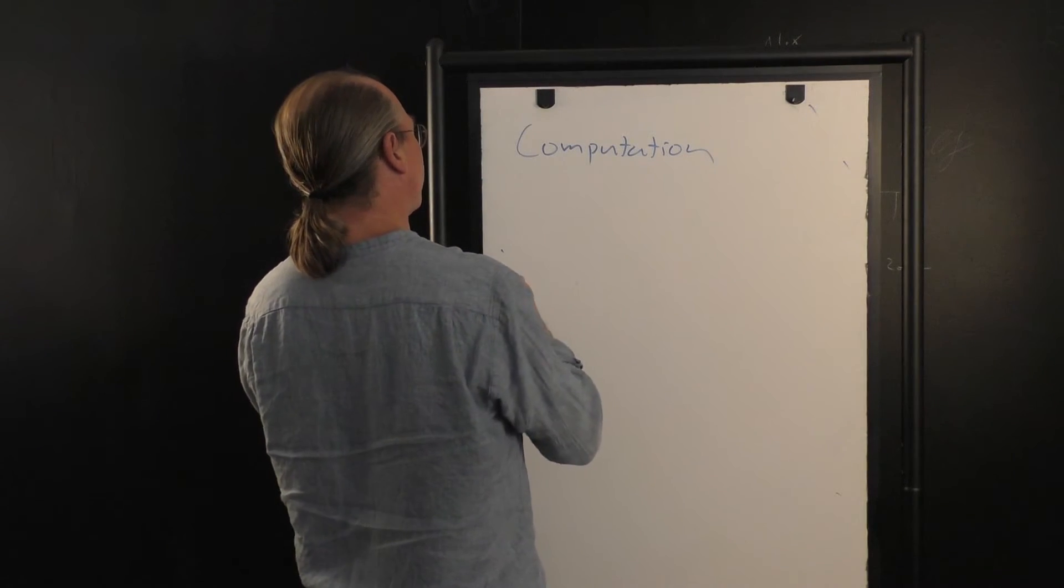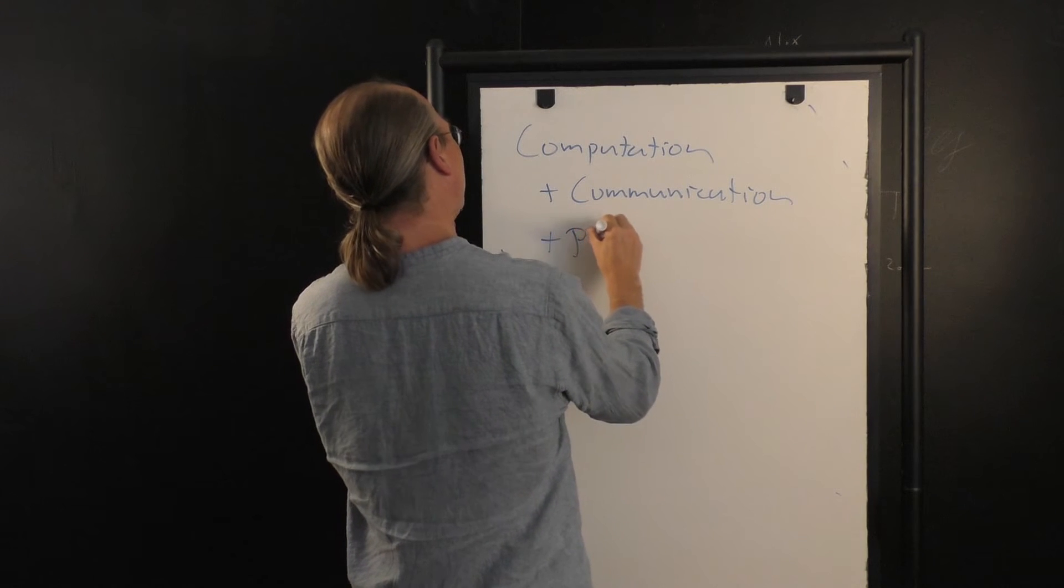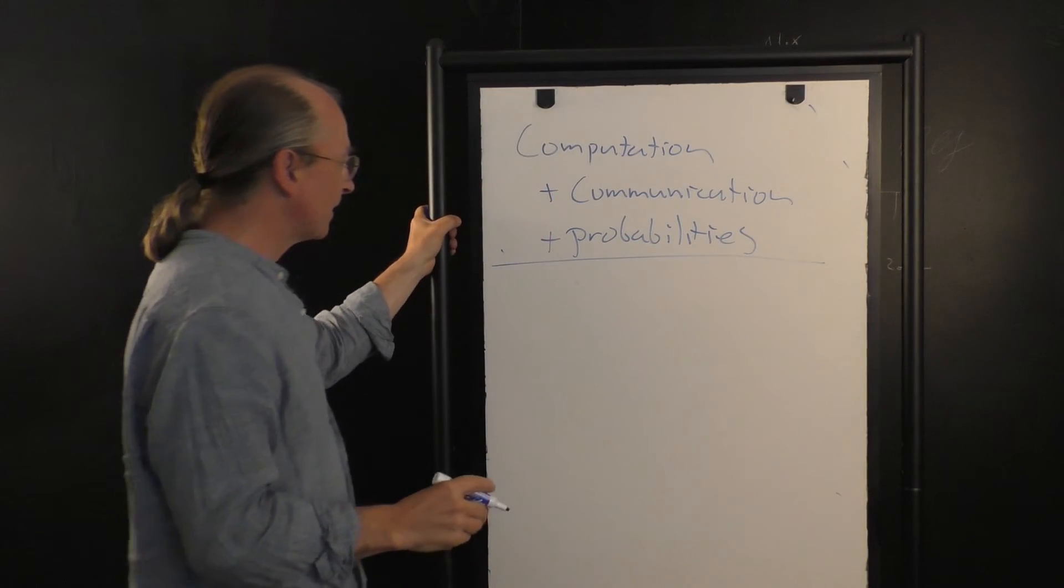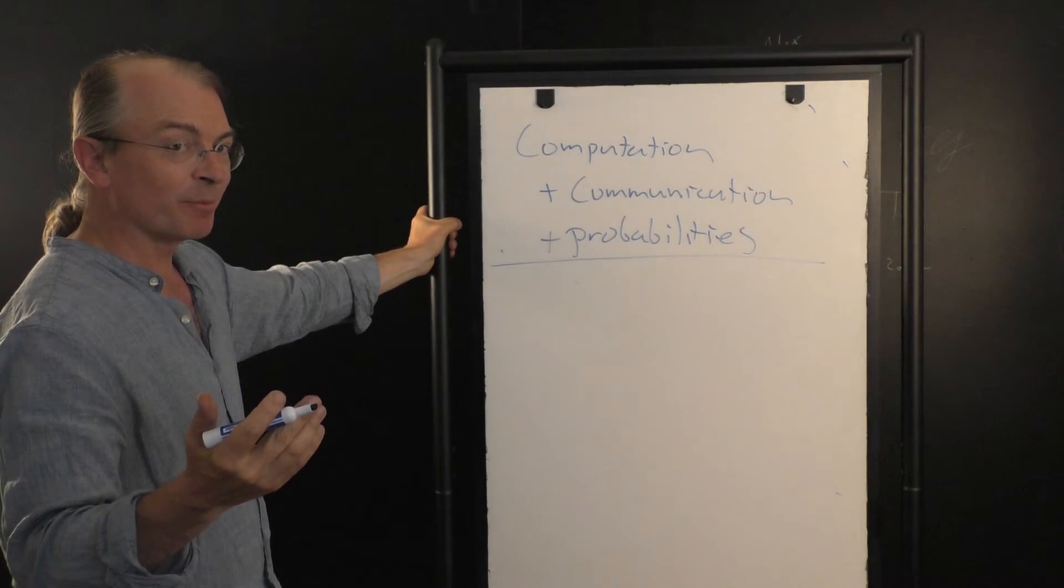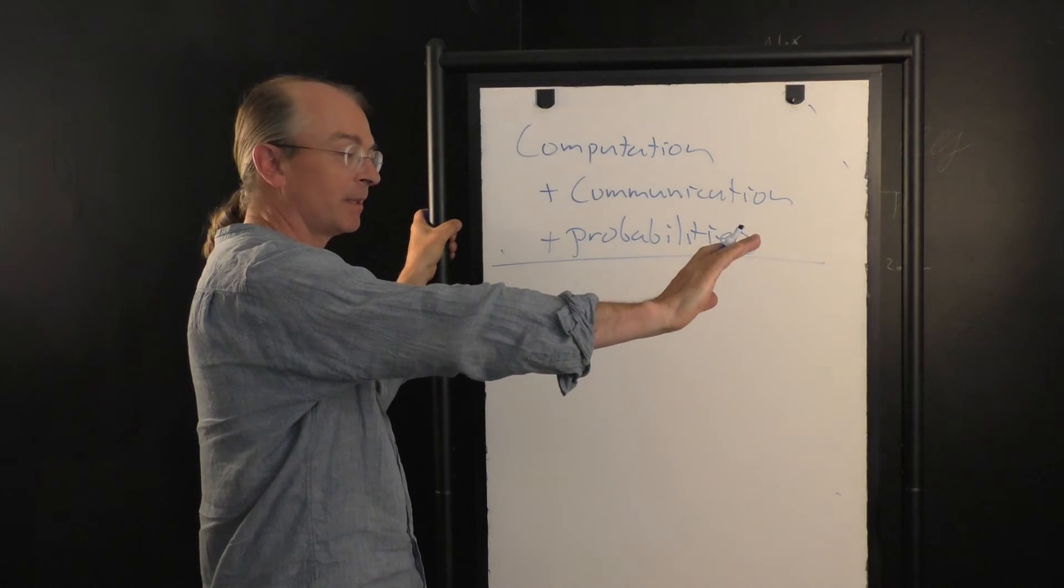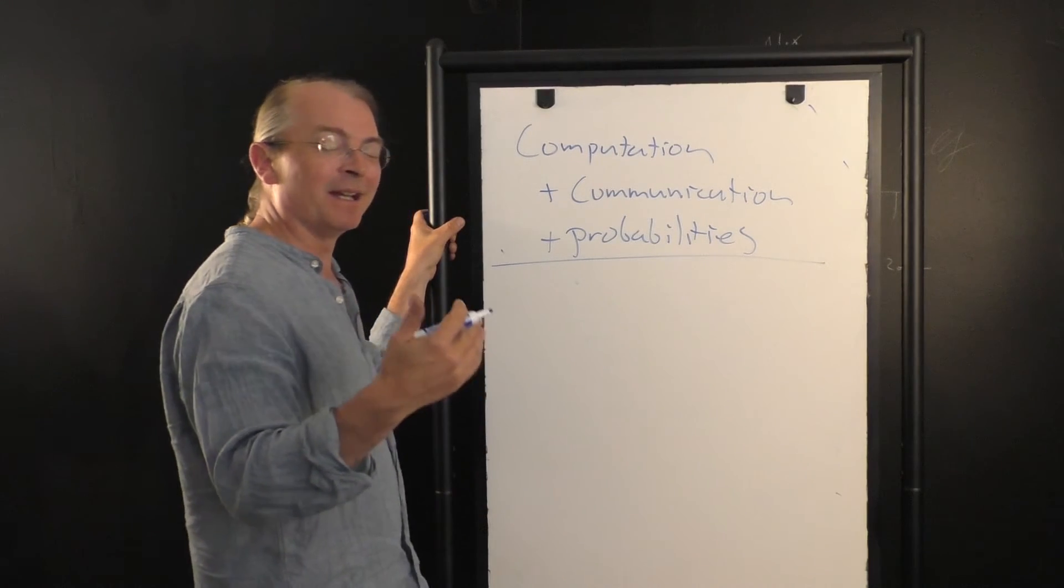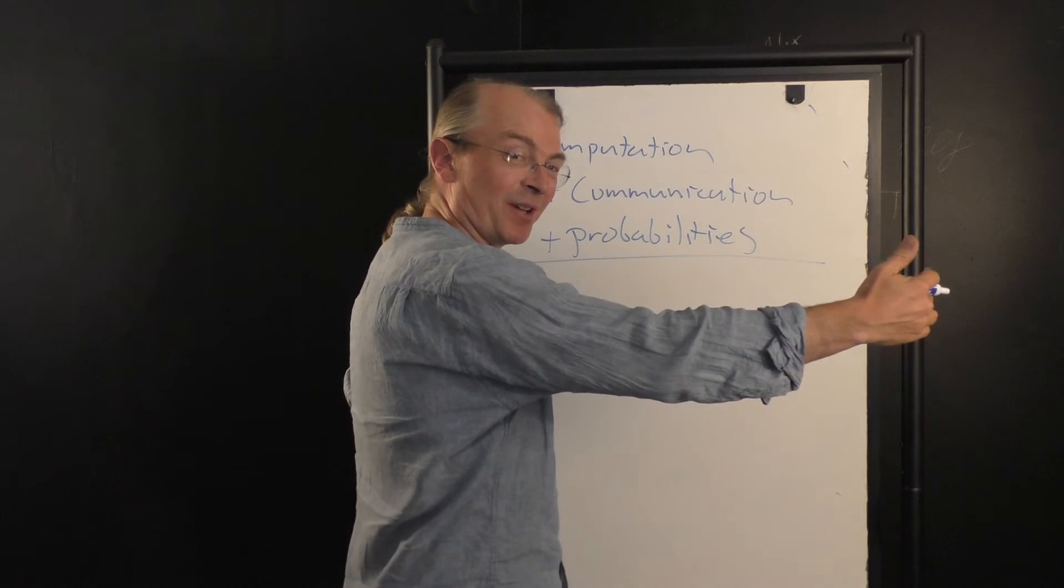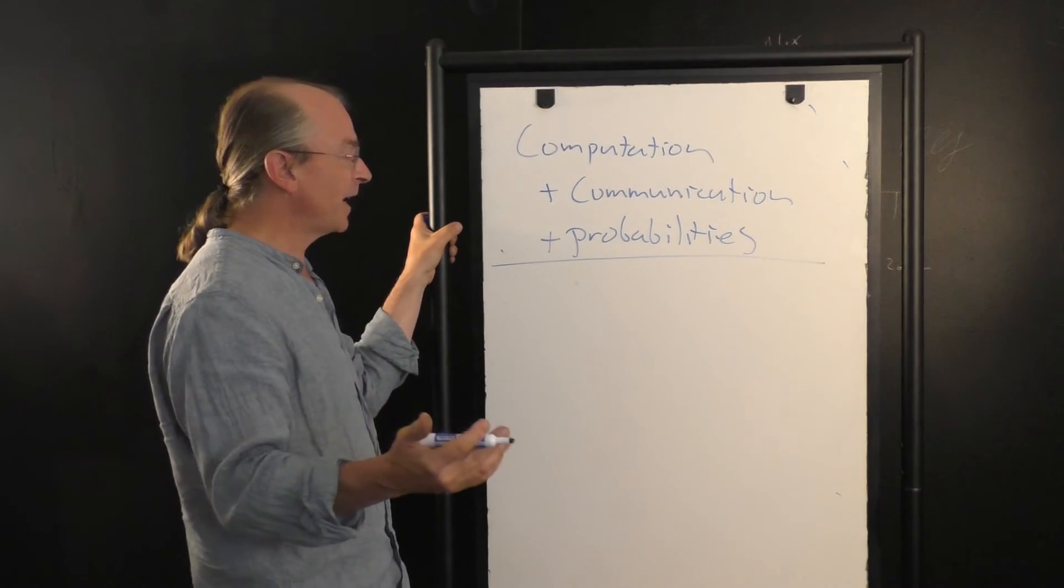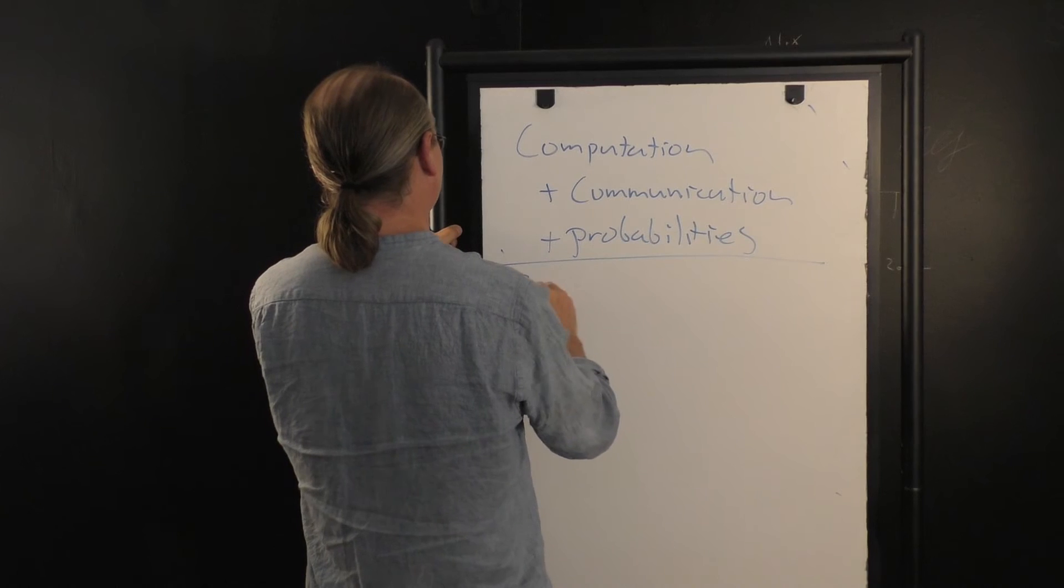And if we put together computation and communication and probabilities, what we find is that taking together the idea of information, processing information as computation, sending information reliably from one place to another is communication. This information refers at bottom to the probabilities of events: being sunny, being rainy, probability that a photon going into a channel makes it out the other side, probability of zero, probability of one, probability of heads, probability of tails. But when we put together these three pieces interlocking, what we get is the theory of information.